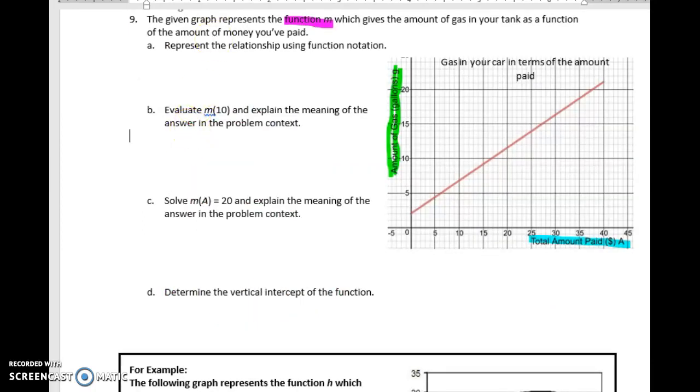So now in question nine, we want to look at this scenario. And so we're talking about the function name being M. Our input is A, and our output is G. So our function name being M, we want to start with the output G equals, and then our function name M of our input, which is A.